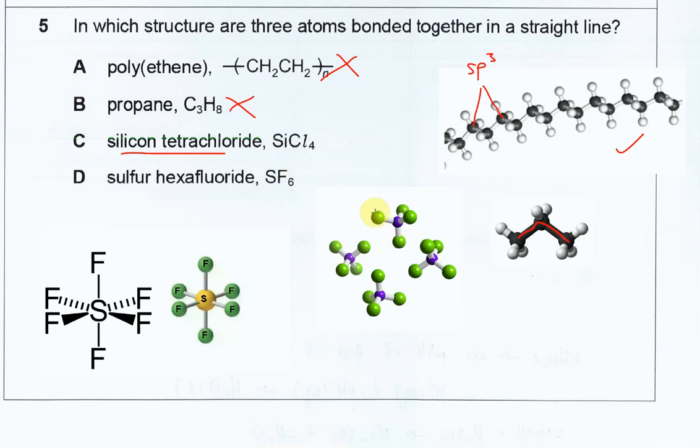But this is not really the one that relates to this question, we just need to know whether there are three atoms in a straight line. Obviously from this diagram, all the atoms cannot be in a straight line, right, that's why SiCl4 cannot be the answer.